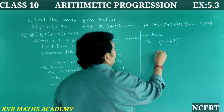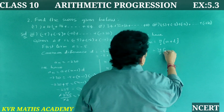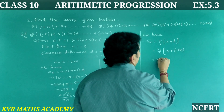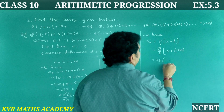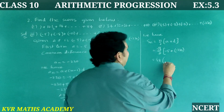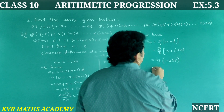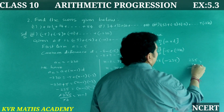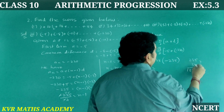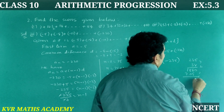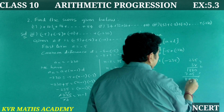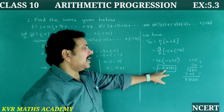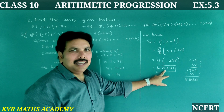With n = 76, a = −5, and last term L = −230: Sₙ = 76/2 × (−5 + (−230)) = 38 × (−235) = −8930. The sum of the terms of the given AP is −8930.